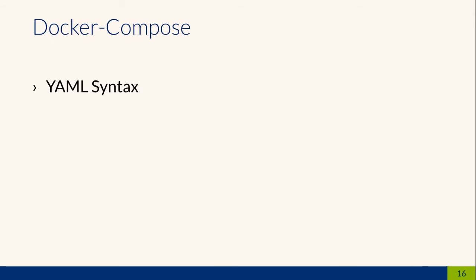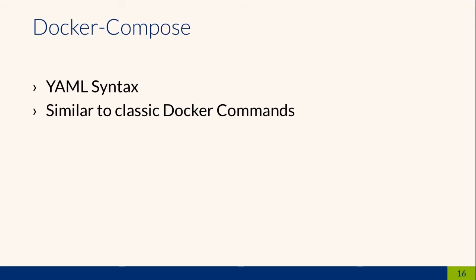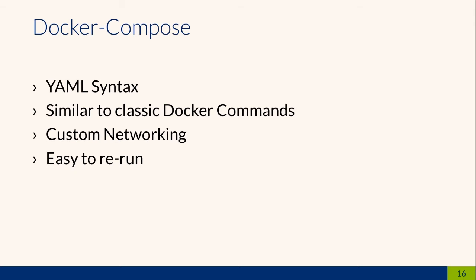Docker Compose has a nice easy YAML syntax and is quite similar to the classical Docker CLI commands, so you can reuse your knowledge. It provides custom networking — if you start up a lot of different containers in one Docker Compose file, it creates a network within them so they can access each other but not outside containers. And the best part: it's really easy to rerun. You just create one Docker Compose file, put it next to the other files in your GitHub repository, say Docker Compose up, and everything is started — images are pulled or built depending on the file.